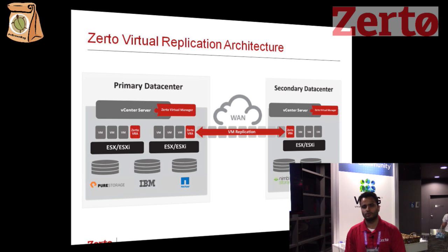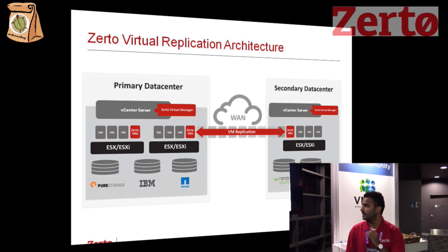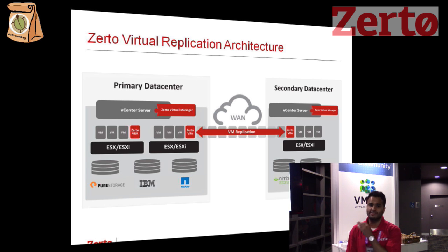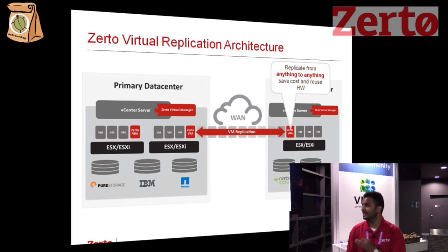The next component, also deployed through the Zerto Virtual Manager interface, is the Virtual Replication Appliance — the heart of our technology. This is where the replication occurs. By replicating between our appliances at the hypervisor level, we're actually able to shift replication away from traditional storage-based replication, which means we can replicate from anything to anything. We're completely agnostic to the storage layer underneath, giving you the flexibility to break free from vendor lock-ins and make infrastructural decisions in the future.